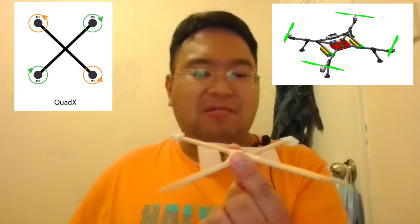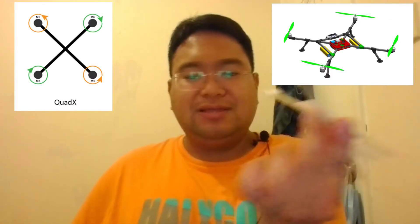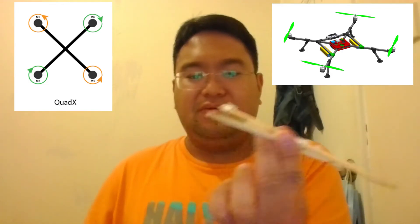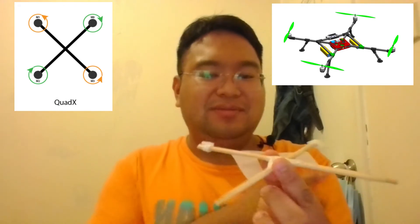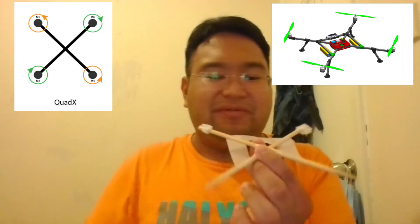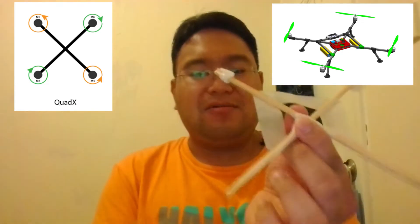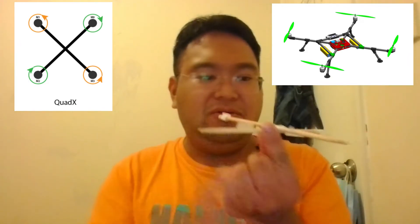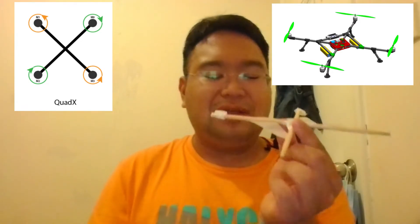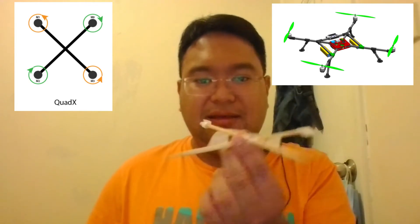To recap for quad X: to roll one way, increase the speed of two motors on one side; to roll the other direction, increase the other two. To pitch forward, increase the two back motors; to pitch backward, increase the two front motors. For yaw, take the pair of motors rotating in one direction and increase their speed to yaw that way; increase the other pair to yaw the other direction. That's how you control roll, pitch, and yaw in quadcopters. You then map the different motors to the RC controller and you're set — at least in theory.